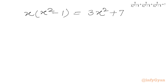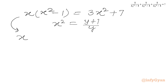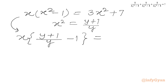Now we know x² equals (y + 1)/y from equation 1. Applying this substitution, we get x times [(y + 1)/y - 1] on the LHS, equal to 3 times (y + 1)/y plus 7 on the RHS.